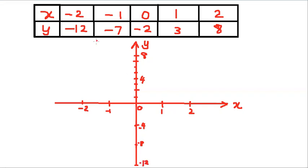Then we want to mark one by one those points. Minus 2, minus 12 is the first point like this. Second point: minus one, minus seven, this point. Zero, minus two. Zero minus two means x is 0, y is minus 2. x is 1, y is 3. x is 2, y is 8 like this.